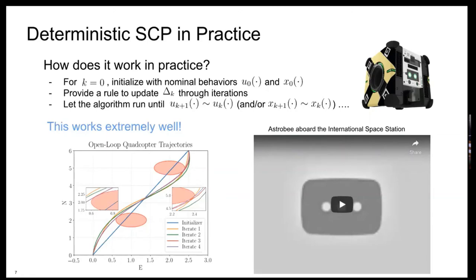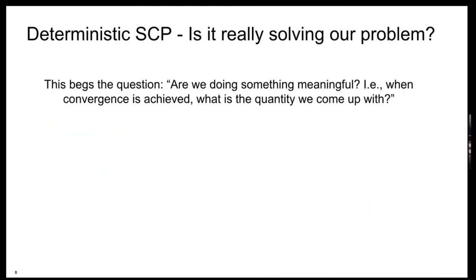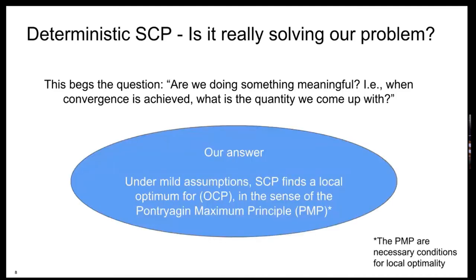Long story short, we discovered that SCP is a very promising method, at least practically. But this automatically begs the question: are we doing something good? We noticed that in the vast majority of cases we converge to something in this intuitive way, but what can we say about this limiting point? We discovered an interesting answer: under pretty general assumptions, whenever SCP converges, it is able to find a local optimum for the original optimal control problem, in the sense of the Pontryagin maximum principle.